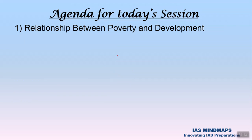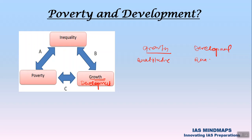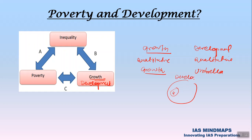Friends, in today's session we are going to discuss the relationship between poverty and development. Poverty and development are both very interlinked to each other. Growth is one aspect of development. The difference between growth and development is that growth is a very quantitative phenomenon and development is qualitative. Development is a very umbrella or comprehensive term, and growth is just one aspect within it.